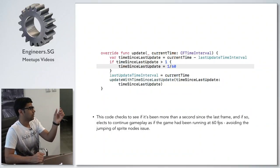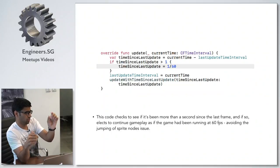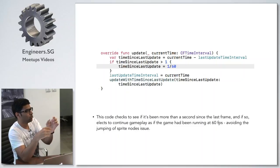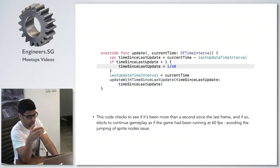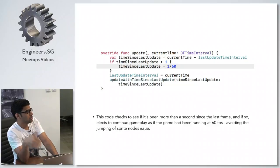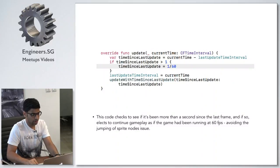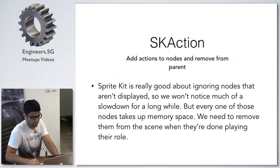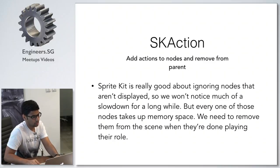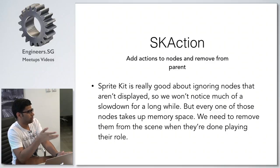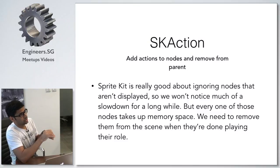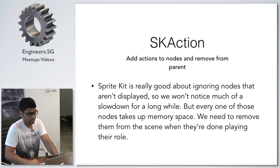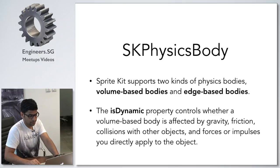Let's say there's a spaceship in your view and you're building a game where you move the spaceship whenever you touch the screen. When you touch the screen, the spaceship moves from its position to the touch point. You won't see any jumping of the spaceship if you do the correct calculation in this update method. SK Action is used for deterministic calculations — for example, moving a node with constant velocity from point A to point B.